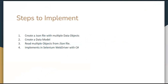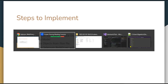First, we need to create a JSON file with multiple data objects or datasets. Second, we have to create the data model for reading the keys from the JSON file, and read the multiple objects from the JSON file using C# code. Then we'll implement that same concept in Selenium WebDriver with C# — how to read multiple data from a JSON file into your test automation.